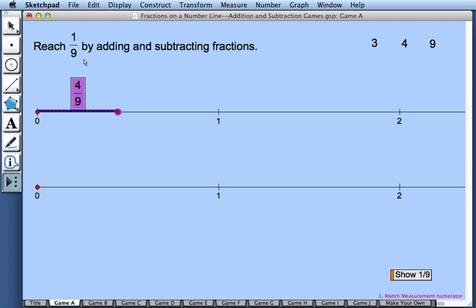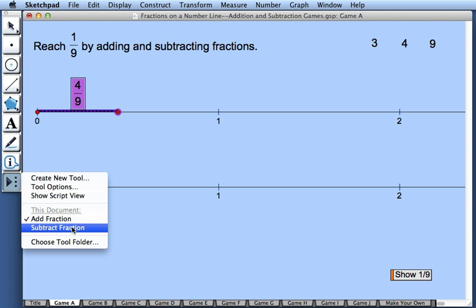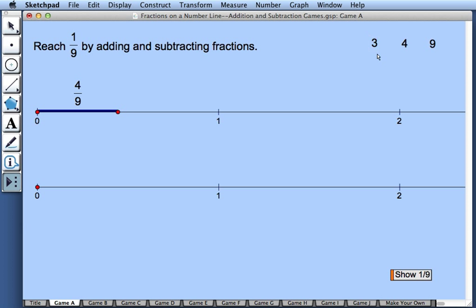Now my goal is to reach 1 ninth. Since I'm at 4 ninths, I'm going to subtract 3 ninths. So since I'm subtracting, I'll come back to Custom Tools and I'll choose Subtract Fraction. Now I'll click 3 and 9, and this gives me a red segment for subtraction, and this one I'm holding onto by its right endpoint. So I'm going to match its right endpoint with the right endpoint of 4 ninths to subtract 3 ninths from 4 ninths. And this point here I predict will be 1 ninth. I can check by pressing Show 1 ninth.